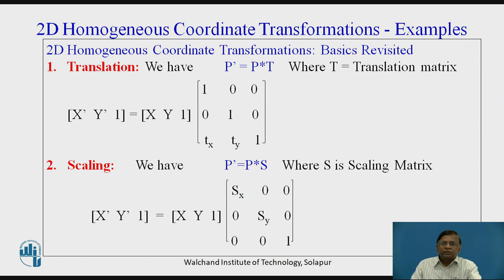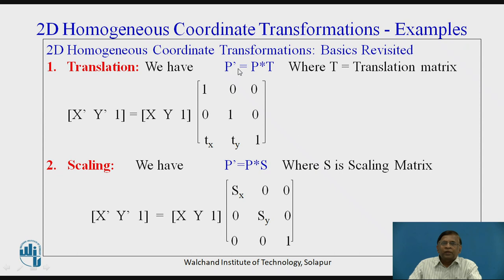Let us revise a few basics from the earlier video regarding 2D Homogeneous Coordinate Transformations. In translation, we represent the mathematical relationship as p-dash equals p into T for a point to be transformed, wherein p-dash is the new translated point, p is the original point, and T is the translation matrix.